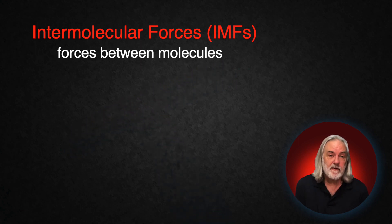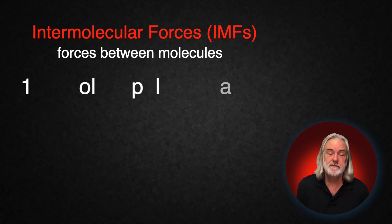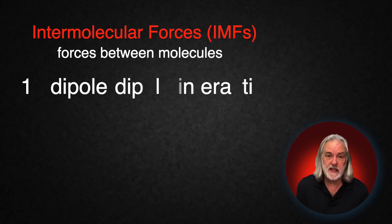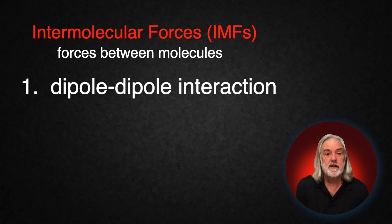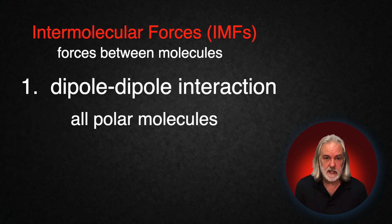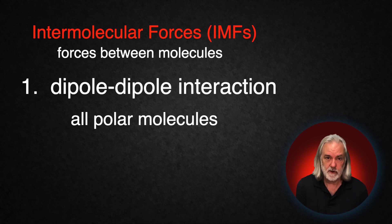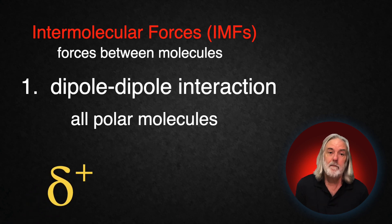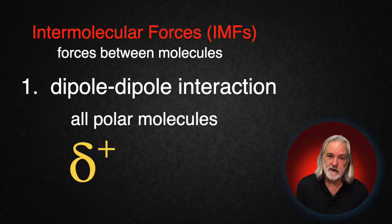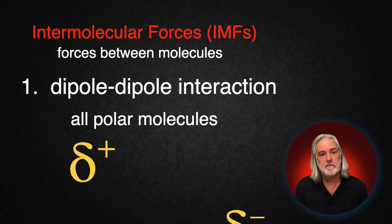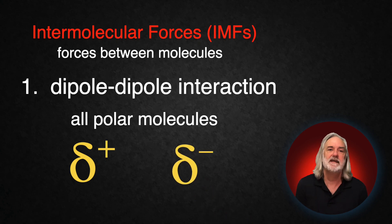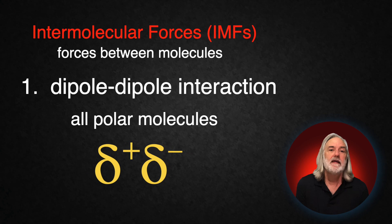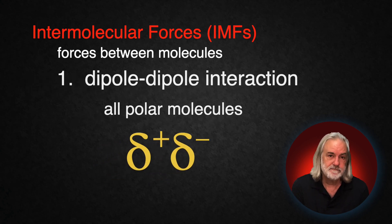We categorize these into three different types. The first type is called dipole-dipole interaction, and it only occurs if you have a polar molecule. So you have to understand how polarity works. The partial positive part of a molecule will attract the partial negative of that same molecule and kind of pull them together. This is dipole-dipole interaction.